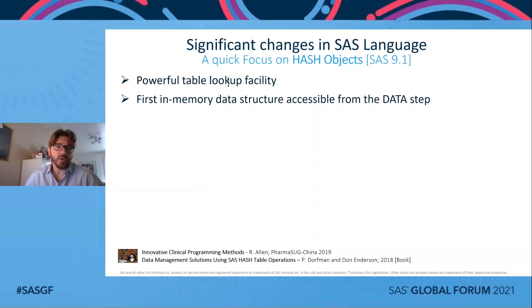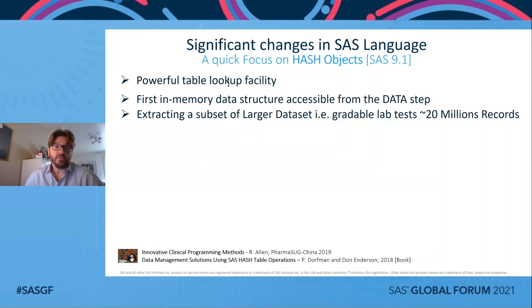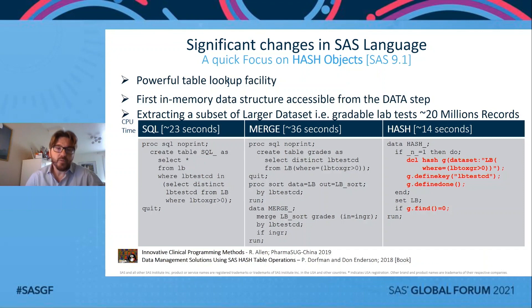In SAS 9, and specifically with SAS 9.1, the use of hash objects was also made available. This is a great feature for a lookup facility, especially when you have to deal with large datasets, as hash objects represent the first in-memory data structure accessible directly from a data step. I did a test to compare the use of hash objects against two traditional alternatives in SAS to search and extract from a large dataset with, say, 20 million records. From this simple test, you can see how much faster hash objects are compared to SQL or the traditional merge.